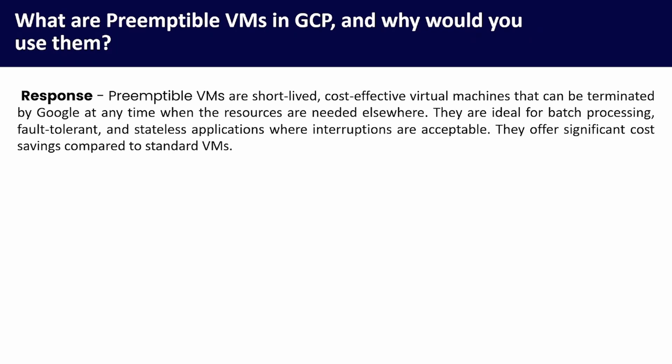What are preemptible VMs in GCP and why would you use them? Preemptible VMs are short-lived, cost-effective virtual machines that can be terminated by Google at any time when the resources are needed elsewhere. They are ideal for batch processing, fault-tolerant, and stateless applications where interruptions are acceptable. They offer significant cost savings compared to standard VMs.